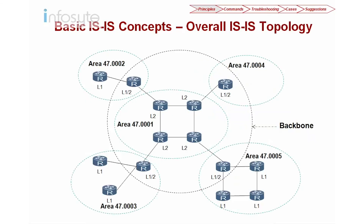Let's look into the topology of ISIS. As you can see here, I have the area numbers. This is the network entity number. The network entity here is 47.0001, and we have 47.0002, 47.0003, 47.0004, 47.0005, and so on, referring to different areas.